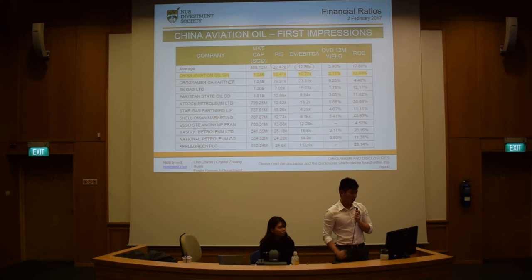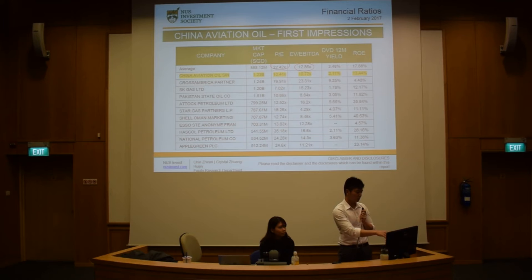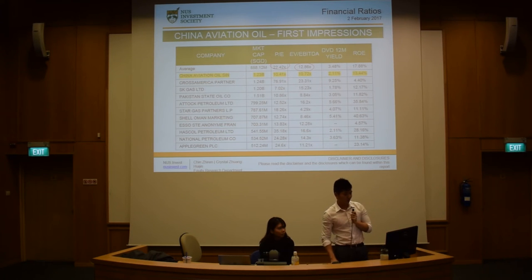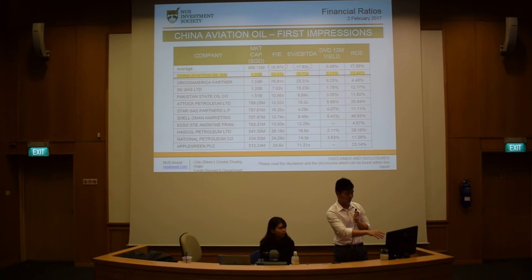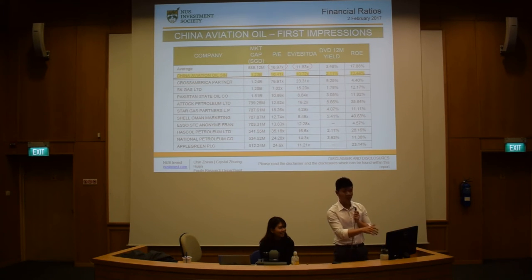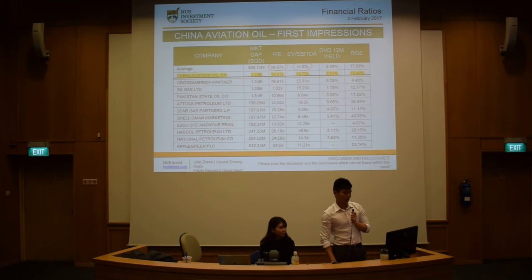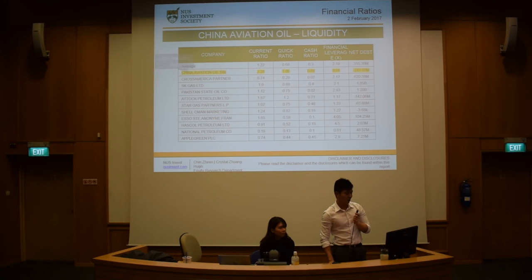Compared to China Aviation Oil, it looks a bit undervalued. But I'd like to point your attention to this company called Cross America Partners, which is right below China Aviation Oil. As you can see, its PE and EV/EBITDA are very, very high — it's actually an outlier. So you might want to remove it to normalize the data. If you remove it, you realize that the average drops quite a lot, so now China Aviation Oil doesn't seem as undervalued compared to the industry average. The first step is to take out all the outliers, those that might have a weird story.